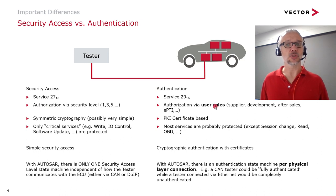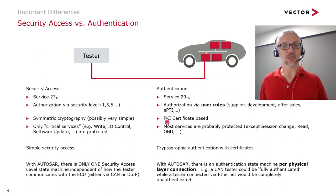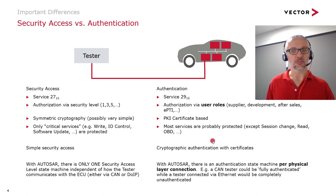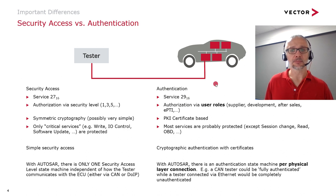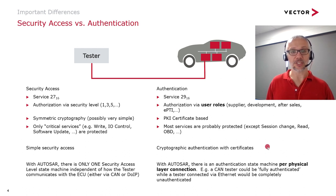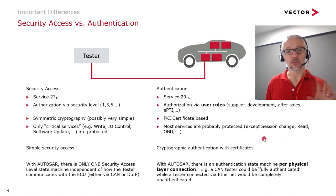With the new authentication service, we saw how we can have authorization via a role. A role can give a set of functionality available to us via a public key infrastructure certificate. We also saw how a lot of things we'd normally expect to be able to do are protected — even read data by identifier is potentially protected when we deploy authentication. We have cryptographic authentication with certificates, and rather than having one security state machine for the whole ECU, with AUTOSAR we can have an authentication state machine for each individual physical layer connection. This is much more robust.